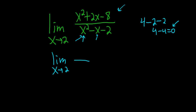I think we should be able to factor this. We need two numbers that multiply to negative 8 and add to positive 2. That's going to be positive 4 and negative 2, and that should work because 4x minus 2x is 2x, and 4 times negative 2 is negative 8, so it checks.